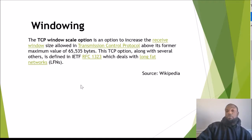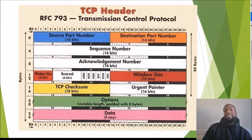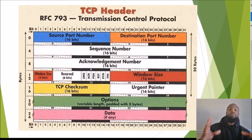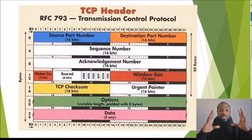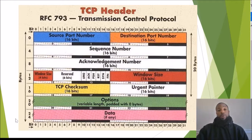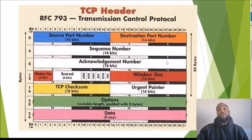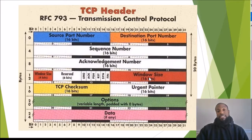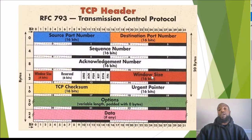Window size is an option in the TCP header — remember, this is not the IP header, which is Layer 3. This is Layer 4, the transport layer. Window sizing uses 16 bits of the TCP header — that's two bytes of the 20-byte TCP header dedicated to the window size option.